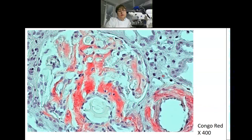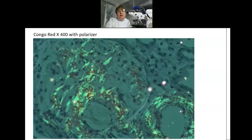This is Congo red stain for amyloid. We use this stain in patients who are older than 40 years. Also, in cases when we do not see any significant changes by light microscopy, we use Congo red stain in younger patients as well. You can see red discoloration in different structures. The same Congo red stain under polarization microscope — polarization allows us to reveal small amounts of amyloid deposits and helps us make the diagnosis.